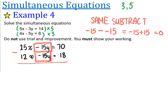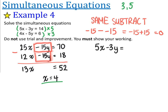So we can go ahead and continue our subtraction. 25 take away 12 is 13x, and 70 take away 18 is 52. We divide both sides by 13, and x is equal to 4. There is the first half of our solution: x is equal to 4. Now again, we choose any equation that we like.